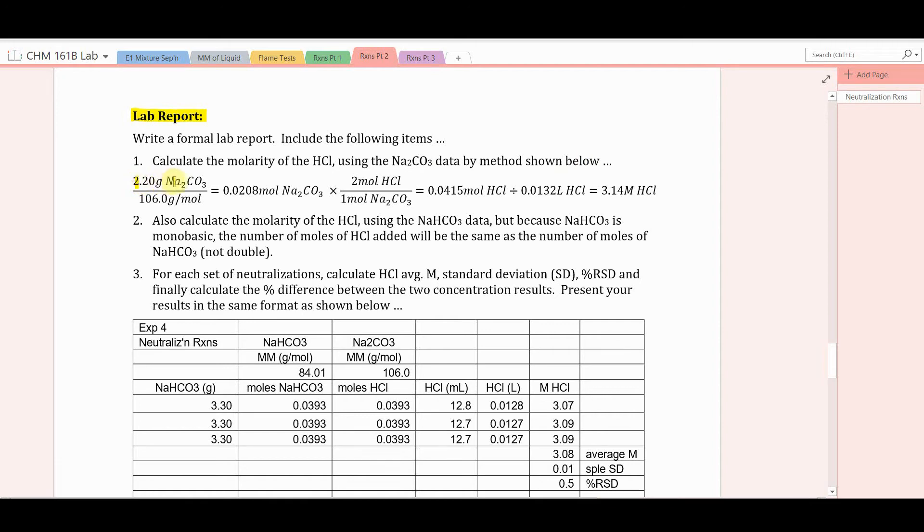Take the mass of sodium carbonate that you weigh out, grams, divided by the molar mass of sodium carbonate, 106 grams per mole, and you get the number of moles of sodium carbonate. Notice the units. Grams divided by grams per mole is moles. Then from there, calculate the number of moles of HCl that will be neutralized by this many moles of sodium carbonate. You do it this way. You know that two moles of HCl are neutralized for every one mole of sodium carbonate. So multiply the moles of sodium carbonate by 2 to get the moles of HCl. It will be double that amount, 0.0415 moles of HCl.